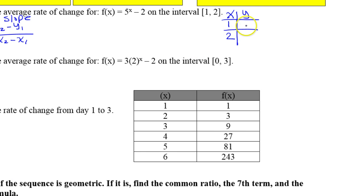So if the x value is 1 and I want the y value, I'm just going to plug in 1. So for this y value right here, I'm going to go 5 to the 1 power minus 2. Well, that's just 5 minus 2, so that's just going to be 3.